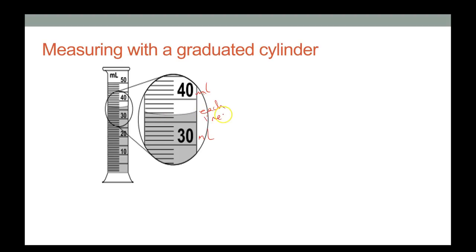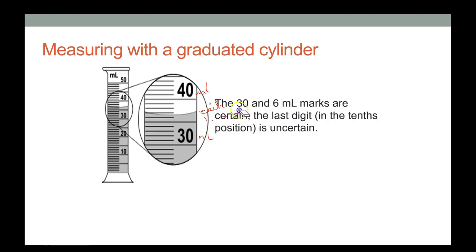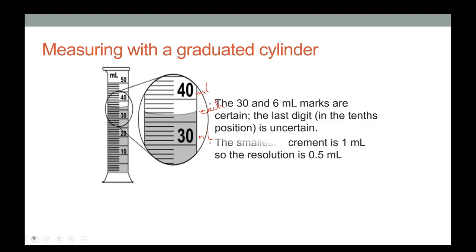Reading this graduated cylinder: counting up to the 36 milliliter mark, it's definitely at least 36 milliliters but not quite 37. The last digit in the tenths position is uncertain. The smallest increment is 1 milliliter; divided by 2 gives 0.5.